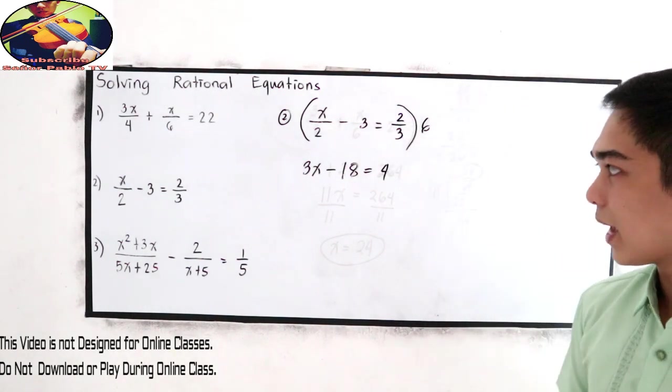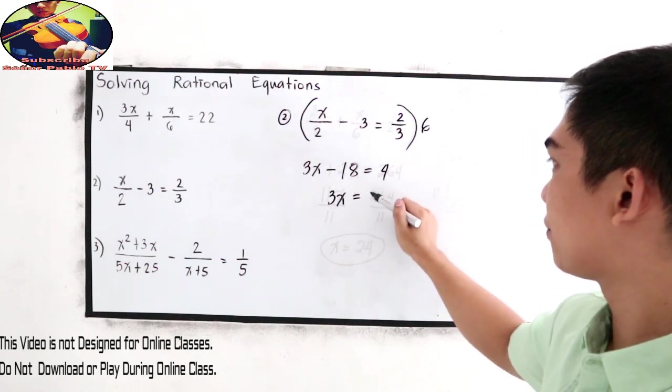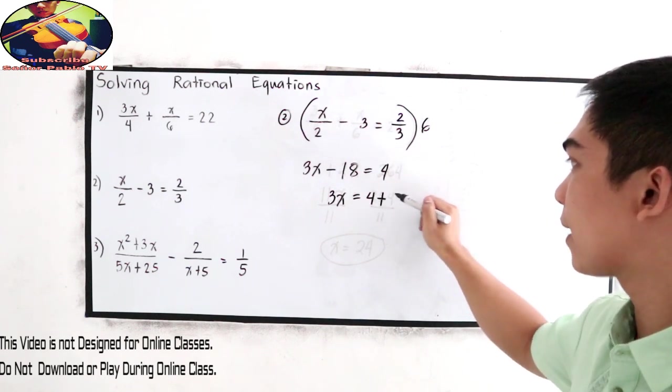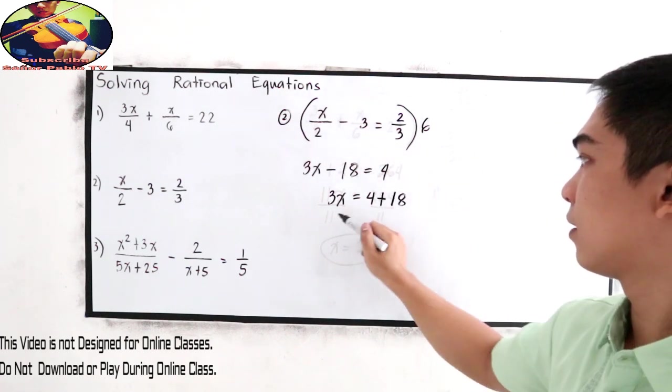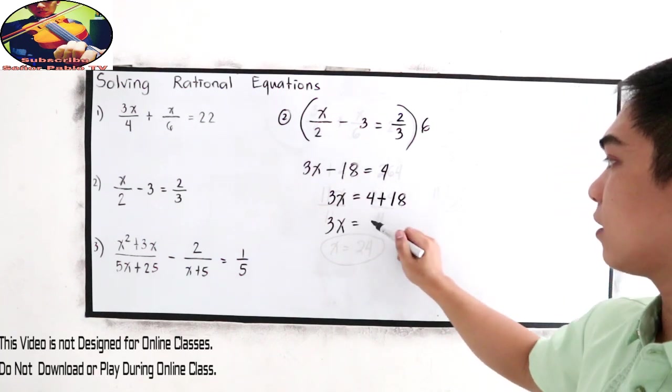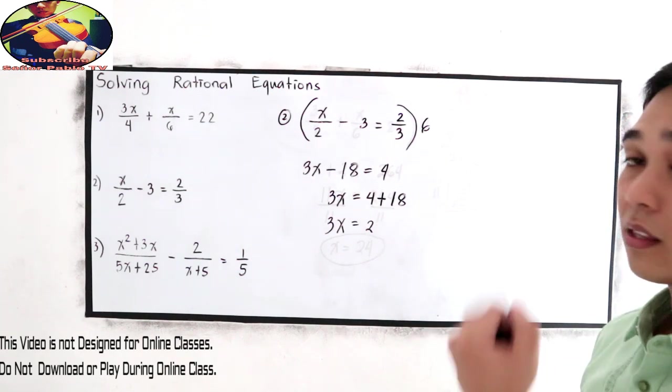Now combine like terms. So 3x is equal to 4. Transpose negative 18 to the right side, that would become positive 18.